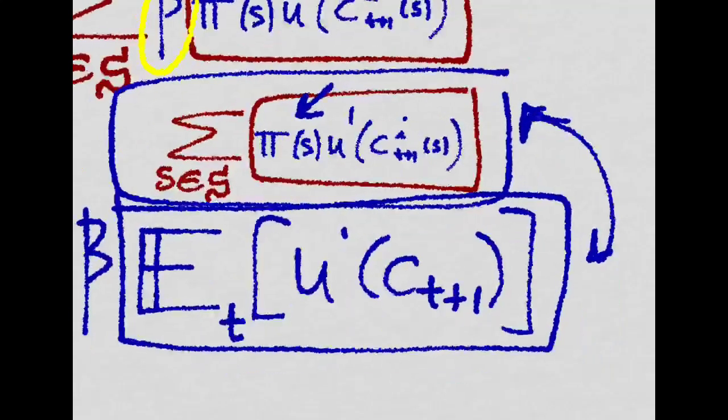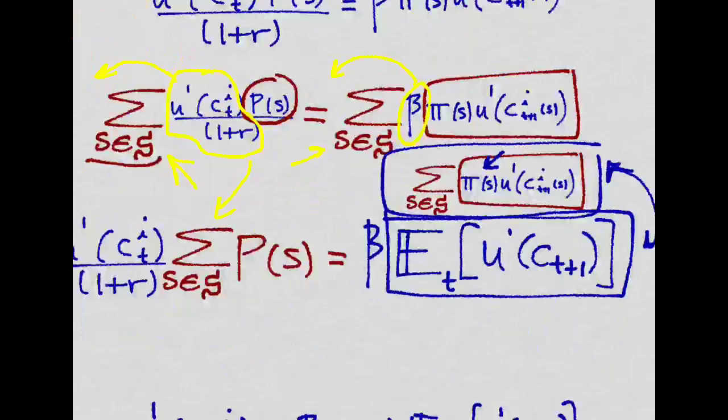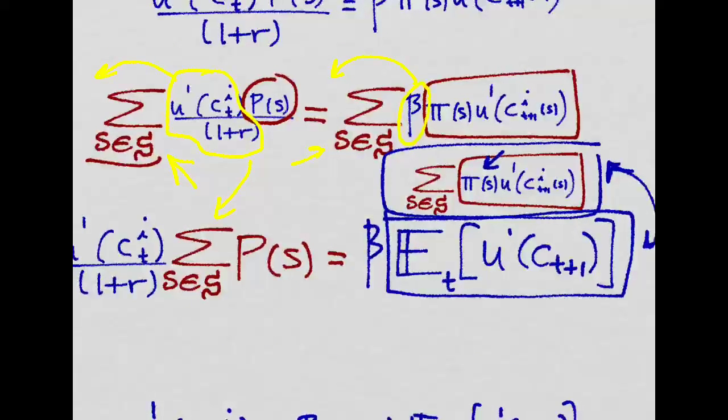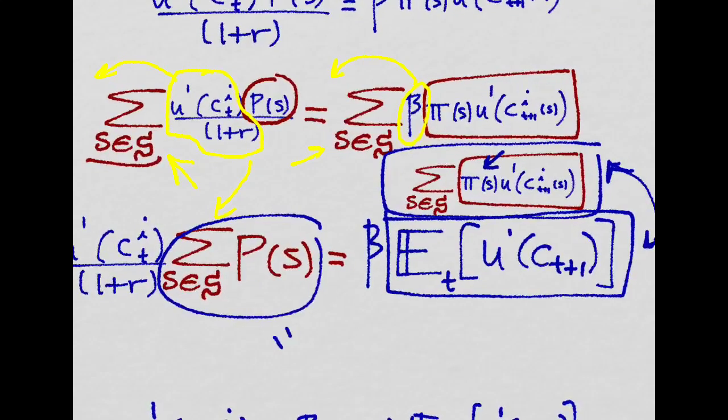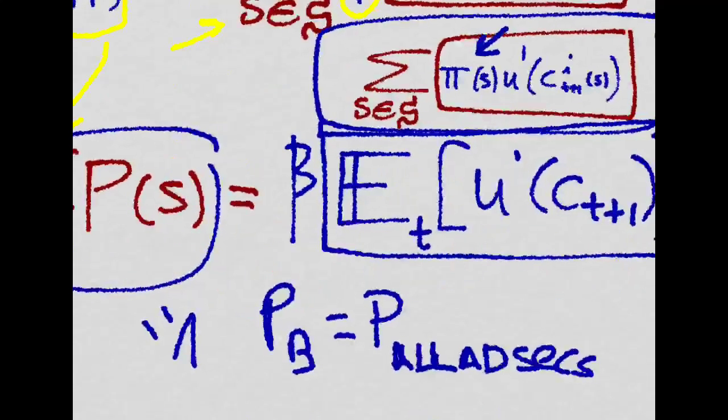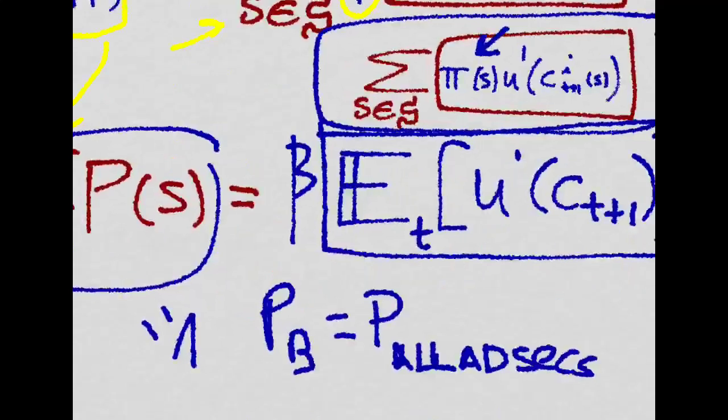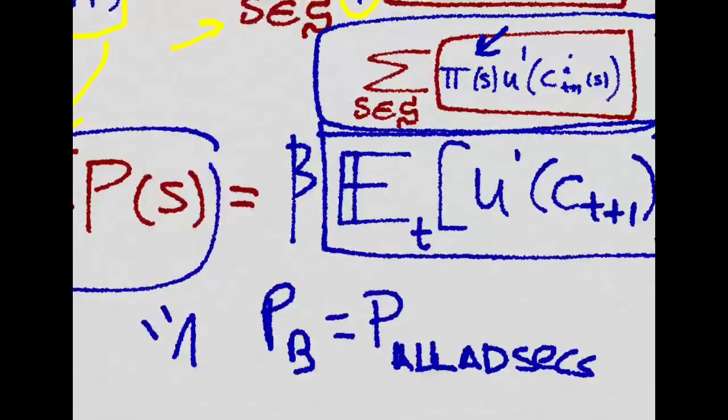These two expressions for the expected utility are equivalent. And recall from our no arbitrage condition that this is just equal to 1 from the fact that the price of the bond has to be equal to the price of all of the Arrow-DeBrew securities.